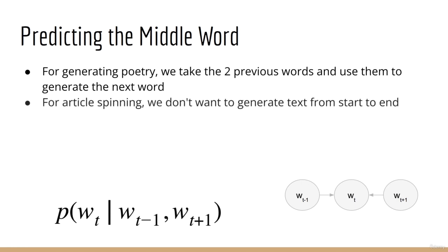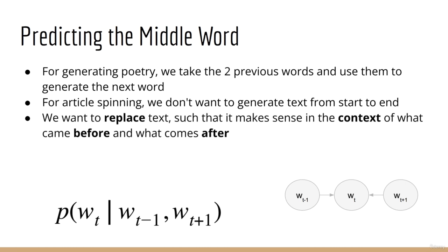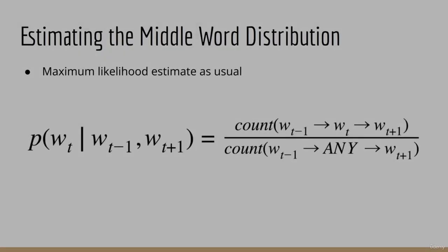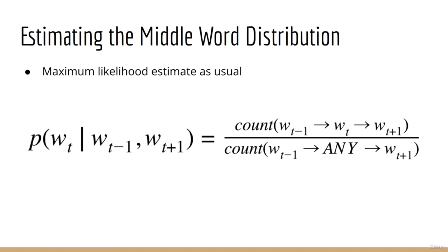For article spinning, our problem is a bit different. It's not that we want to generate text from start to end. Instead, our job is to replace text in such a way that it still makes sense in the context of the text that came before as well as the text that comes after. So here is the idea: create a distribution for wt given wt-1, the previous word, and wt+1, the next word. This is still a trigram model, except the dependency structure is a bit different. The way we estimate this trigram probability is the count of the trigram wt-1, wt, wt+1 divided by the count for the context window wt-1 and wt+1. This is the maximum likelihood estimate.